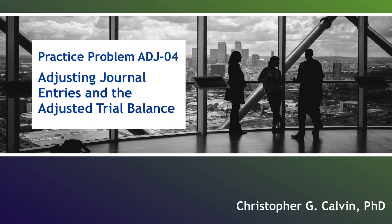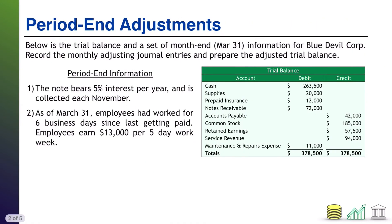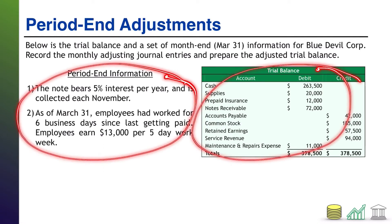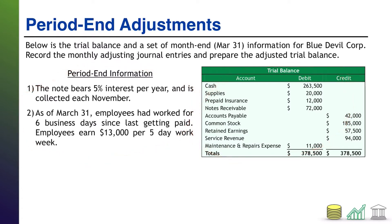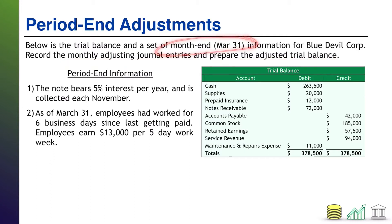Hi everyone. Welcome to Practice Problem ADJ04. This one's all about adjusting journal entries and the adjusted trial balance. I've presented you with a short trial balance and two pieces of period end information. I am asking you to record the monthly adjusting journal entries and then to also prepare the adjusted trial balance for the month ended March 31st based on this period end information.